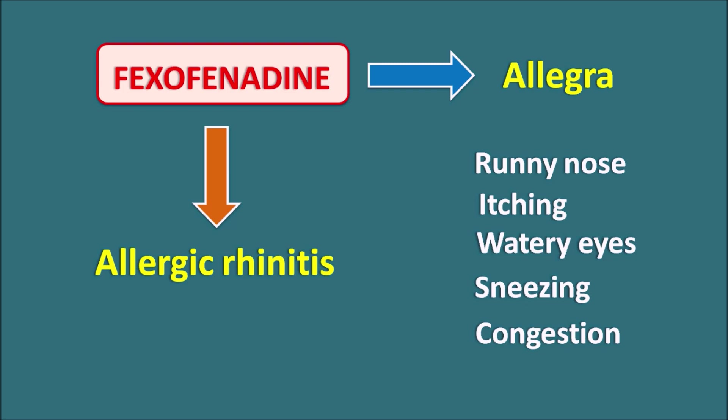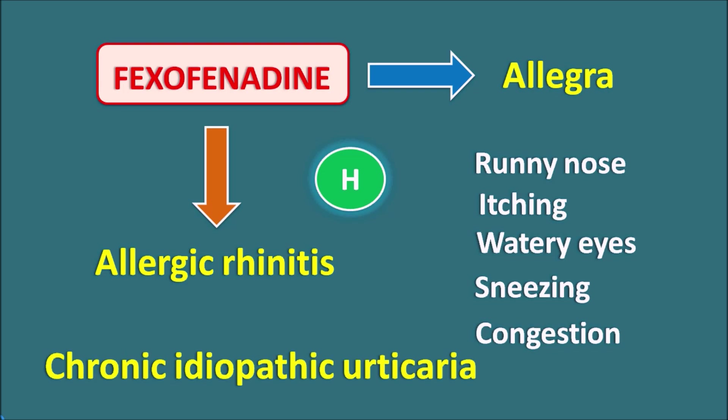All these symptoms can be observed because of the release of one mediator — that is histamine. The actions of the histamine can be blocked by fexofenadine, which acts as an anti-histamine. This drug can also be used in another condition like chronic idiopathic urticaria, which is again an allergic condition that produces skin irritation, itching and allergy.